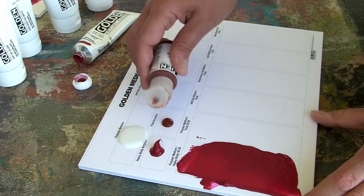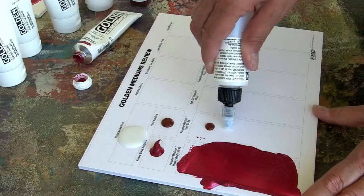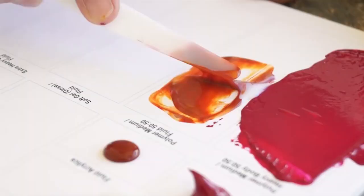When polymer medium is used to extend fluid acrylics, it will increase gloss and transparency, but not impact the feel of the paint to the same degree, since those two products have very similar viscosity and consistency.